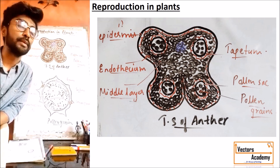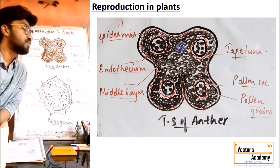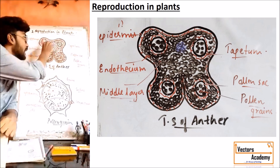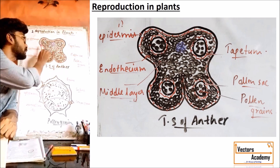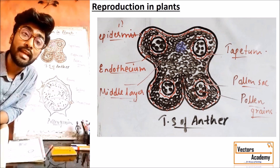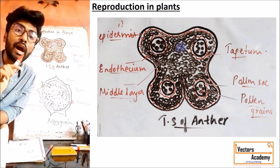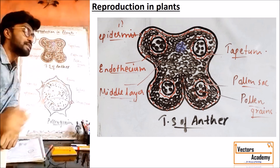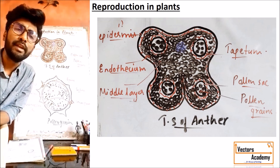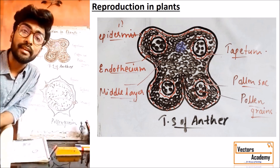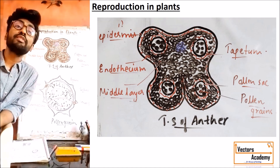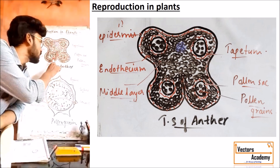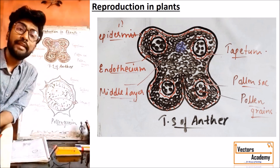The anther is basically made up of two important parts: the anther wall and the pollen sac, also called microsporangium. Internally this anther is made up of important layers. The first is called epidermis — the anther is externally covered by an outer protective fibrous covering called epidermis, which is the outermost covering of the entire anther. Inner to the epidermis is the second layer called endothecium, which is made up of a thickening layer of callose — a kind of polysaccharide.